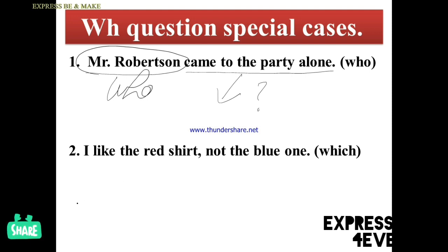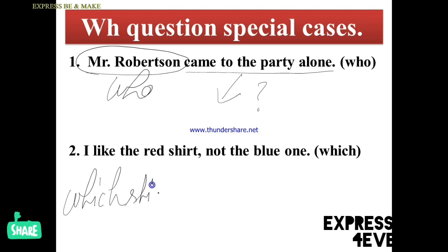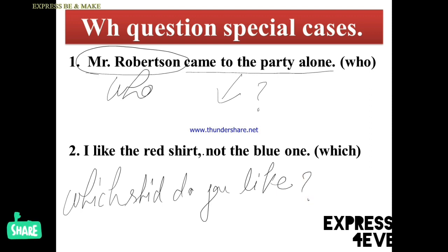Number 2: 'which.' The word 'which' is a special WH word, and after 'which' we should write the answer complementary word — meaning the word that helps you grab the answer. For example, in 'You like the red shirt, not the blue one' — the complementary word is 'shirt.' So write: 'Which shirt do you like?' The main answer is 'the red one'; we avoid 'not the blue one.' So the question is: 'Which shirt do you like?'